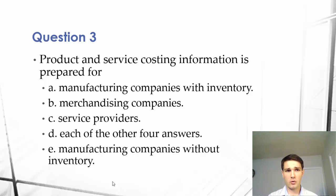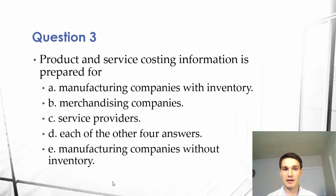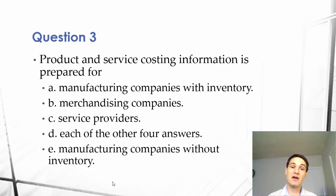Question 3 reads: Product and service costing information is prepared for — A. Manufacturing companies with inventory, B. Merchandising companies, C. Service providers, D. Each of the other four answers, or E. Manufacturing companies without inventory.